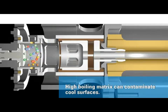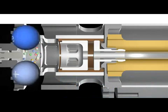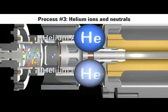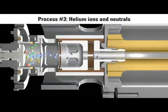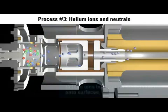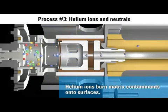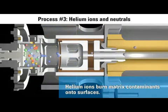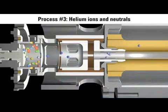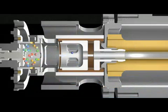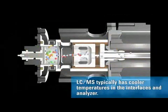A cool surface will accelerate this contamination process. As we think about the potential for contamination, we must not forget helium. The intense flux — high flow of helium ions — helps to burn the high-boiling molecules onto the surfaces of the source and the analyzer. The cooler the surfaces, the faster the rate of contamination, and the faster performance is lost.